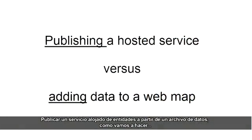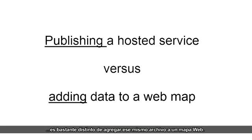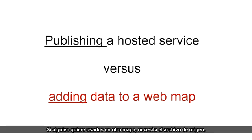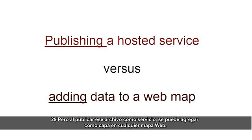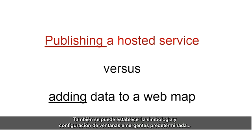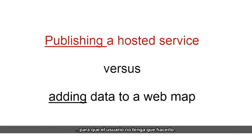Publishing a hosted feature service from a data file is quite different from adding that same file to a web map. When you add data to a map, it lives in the map. If someone wants to use it in a different map, they need the source file. But when you publish the file as a service, it can be added as a layer to any web map. You can also set its default symbology and pop-up configuration so the user doesn't have to set this up.